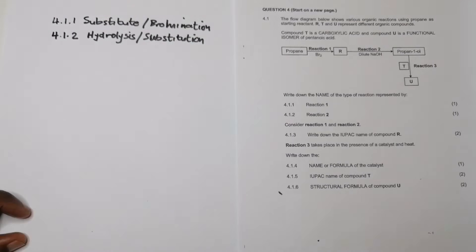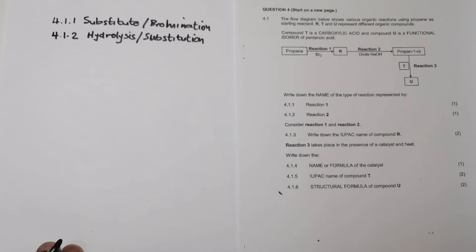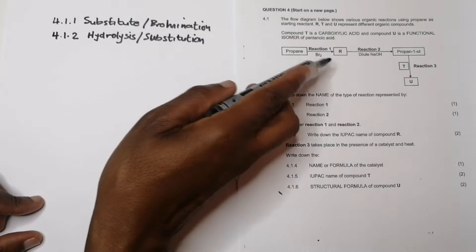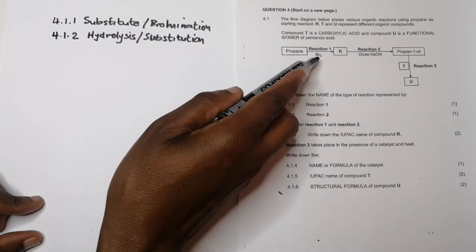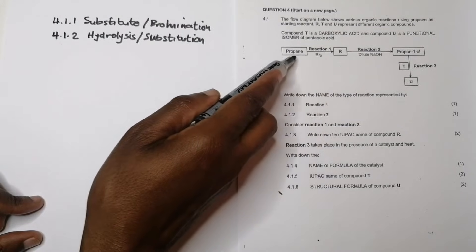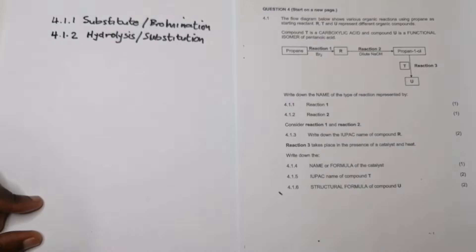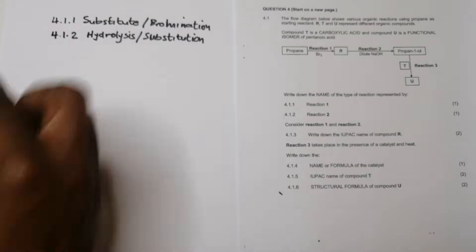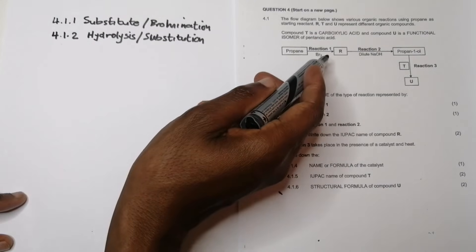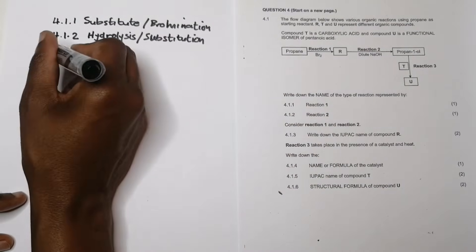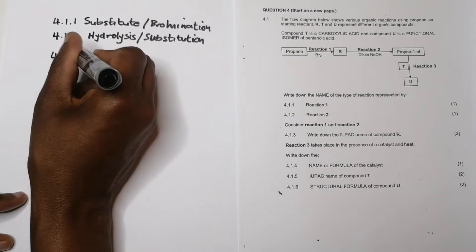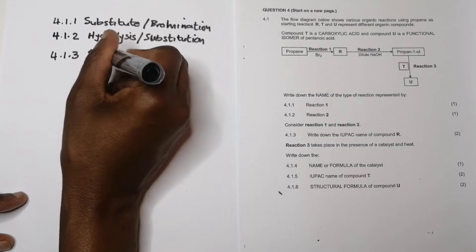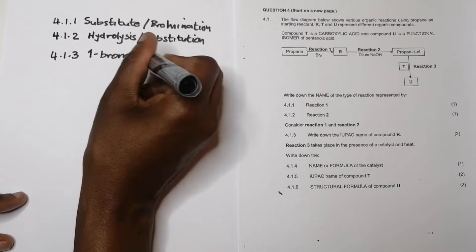Question 4.1.3: write down the IUPAC name of compound R. We took propane and reacted it with bromine. One of the bromide ions attaches at carbon number one, so compound R is 1-bromopropane.